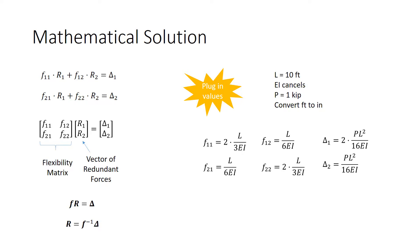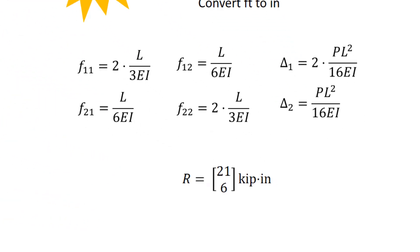This is a 2x2, so you can even do it by hand. Whichever way you want to do it, we can obtain the following result. R1 is equal to 21 kip inches. R2 is equal to 6 kip inches. So now we know the unknown internal moments at those two locations.